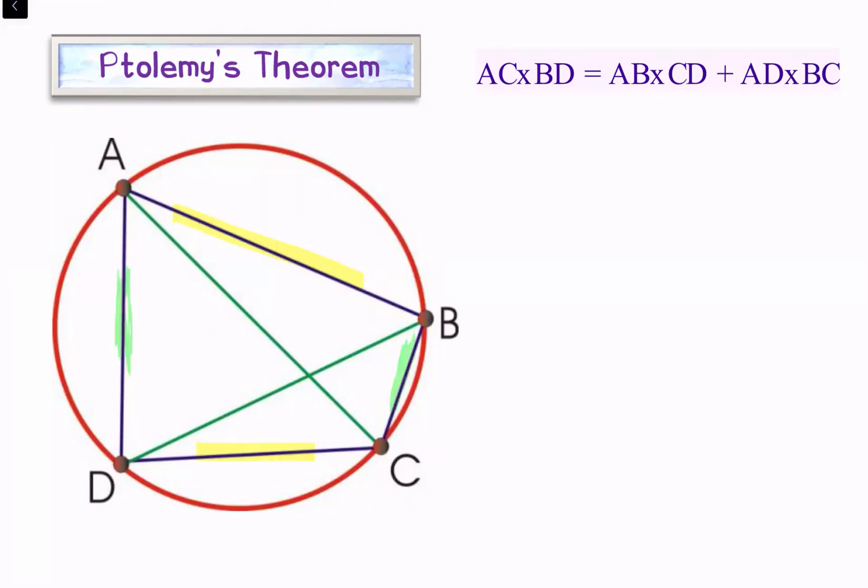This is the product of opposite sides and their sum, which equals the product of diagonals. So that is AC times BD. This is true for all cyclic quadrilaterals.